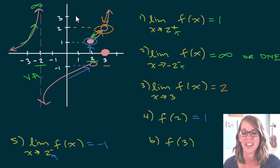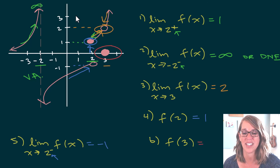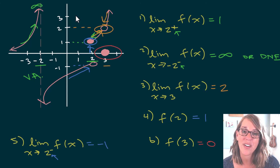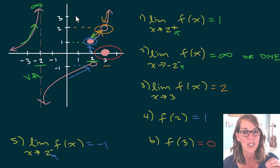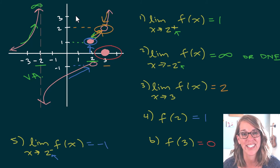Last but not least, let's look for the function value at 3. F of 3 is going to be this closed circle right here, whose value is 0. If this helped, please click the like button to help this spread to more people, and stick around for my next video where we'll evaluate limits using algebra — multiplying by conjugates, factoring — which is probably the next section in your course. Thanks so much for watching.